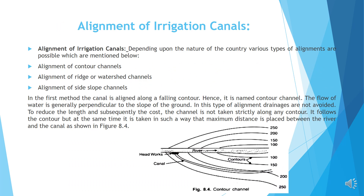Alignment of irrigation canals. Depending upon the nature of the country, various types of alignments are possible: alignment of contour channels, alignment of ridge or watershed channels, and alignment of side slope channels. In the first method, the canal is aligned along a falling contour, hence it is named a contour channel. The flow of water is generally perpendicular to the slope of the ground. In this type of alignment, drainages are not avoided. It follows the contour, but is taken in such a way that maximum distance is placed between the river and the canal, as shown in figure 8.4.